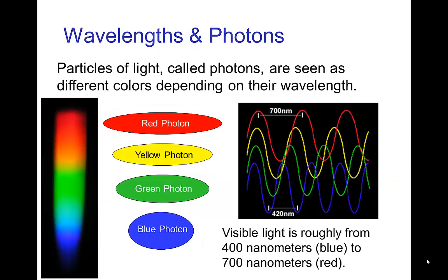The different wavelengths of light have associated with them particles called photons. The longest wavelengths are associated with red photons. Somewhat shorter would be yellow, then green, then blue. When we look at the spectrum, the red photons are on one end with the longest wavelengths, and the blue ones are on the other end with the shortest.